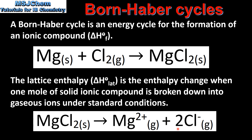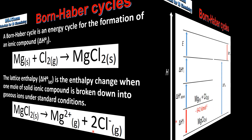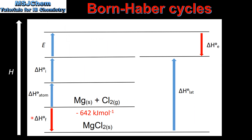Next we look at the Born-Haber Cycle and calculate the lattice enthalpy of magnesium chloride. We'll start our Born-Haber Cycle with the enthalpy change of formation of magnesium chloride from its elements in its standard states.